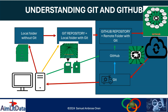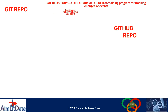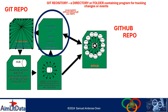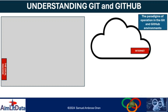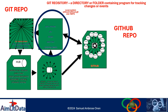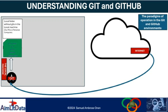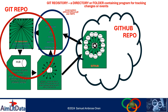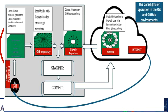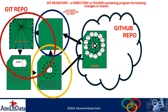That is the mission for this video. We have looked at the repository in a previous video as being a directory or folder containing a program for tracking changes or events, and that program is Git itself. You cannot use Git without having a Git repository. So the local machine is always empty - when I say empty, I mean it is without Git - so you have to go on the internet and install the Git program on your local machine in order to create a Git repository.